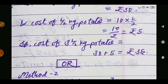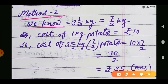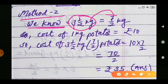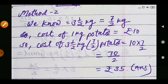Method 2 for the same question: convert the mixed fraction 3 whole 1 upon 2 into an improper fraction. Multiply 3 by 2 to get 6, then add 1 to get 7 upon 2. Cost of 1 kilogram potato is 10 rupees. So cost of 7 upon 2 kilograms equals 10 into 7 upon 2, which is 70 upon 2, equal to 35 rupees. Both methods give the same answer.